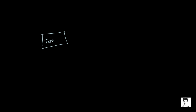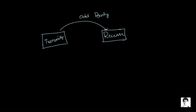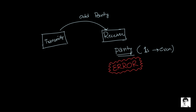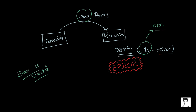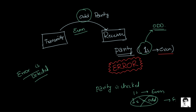Here on the transmission side I am using odd parity. When we receive the binary word, it checks the number of ones. If the number of ones is even, an error is detected, because with odd parity the number of ones must be odd. In the same way, if using even parity, the number of ones must be even, so at the receiving side if the number of ones is odd, an error is detected.